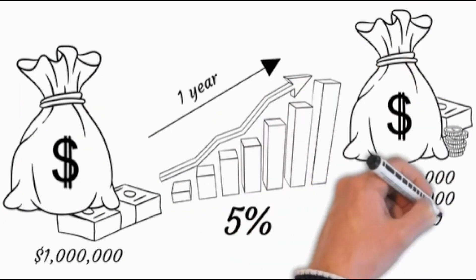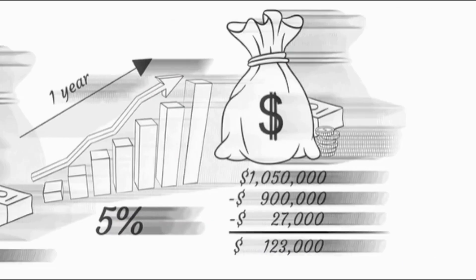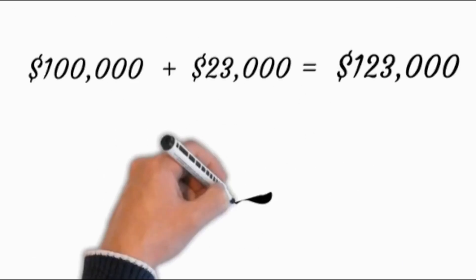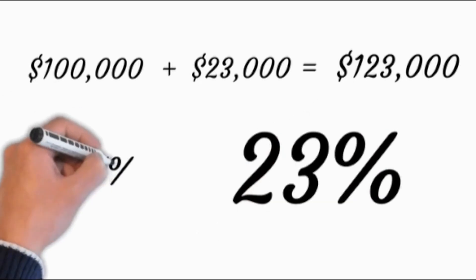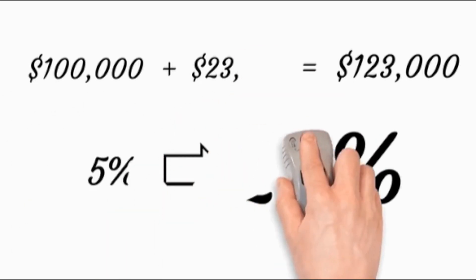After repaying the bank the loan with interest, you have $123,000. Because you use the power of leveraging, you're able to earn 23% on a 5% investment return. These numbers get better the more bank money you use and the longer you leave the investment to grow.